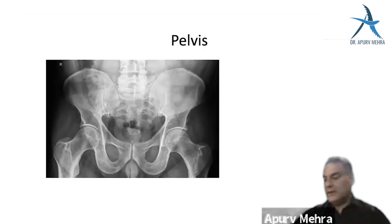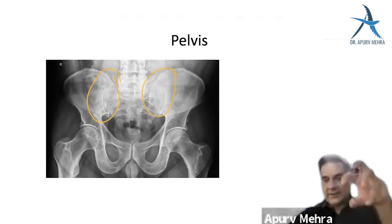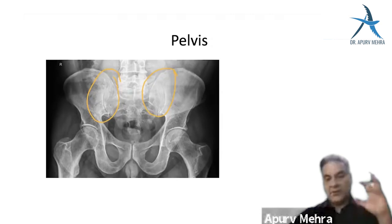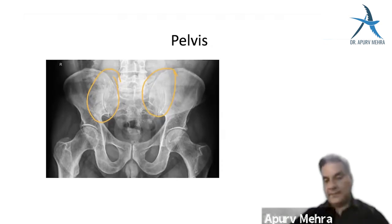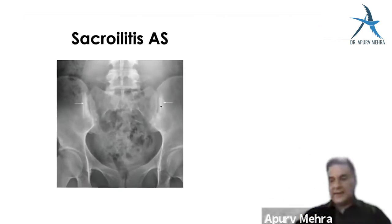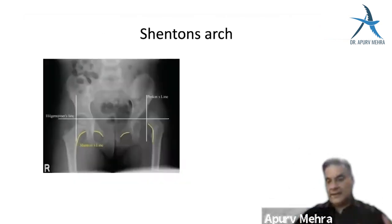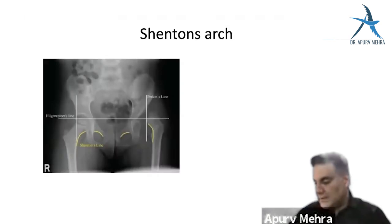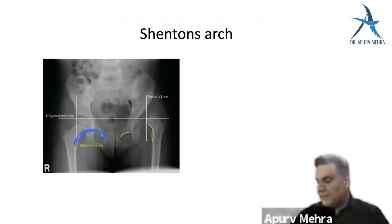Around the pelvis, the sacroiliac area is key. Inflammation of this area — sacroiliitis — is seen in ankylosing spondylitis, presenting with low backache and morning stiffness. On imaging, sacroiliitis appears all white. The arch at the upper end of femur and pelvis is Shenton's arch; if it is broken, it indicates dislocation of the hip or a fracture of the upper end.